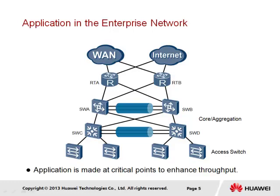The implementation of link aggregation solutions is performed where data congregates, such as in the aggregation and core switches of the enterprise network. As traffic flows to and from end stations to public services and resources, it will pass through such central parts of the network, and if the networks are not well structured, will result in bottlenecks that slow throughput and possibly cause loss of data. Traffic can be shared between switch C and switch D, as well as between switch A and B, so as to reduce any likelihood of network congestion.